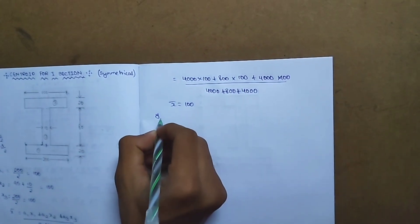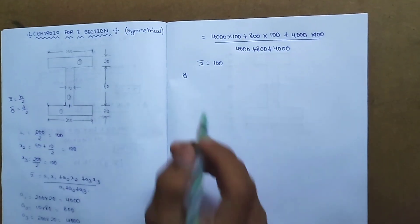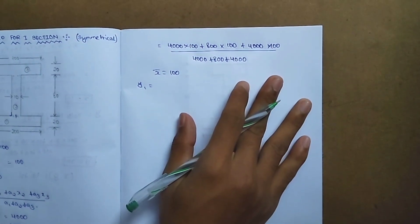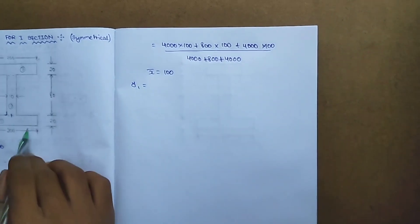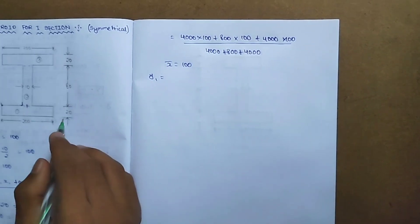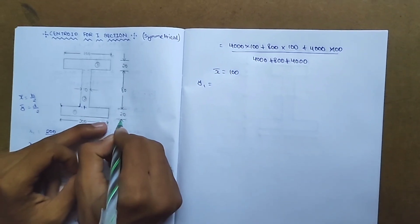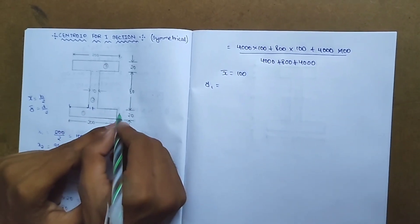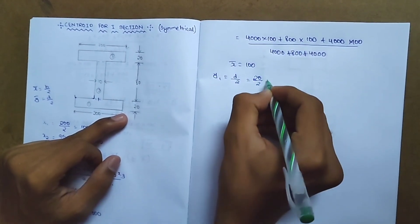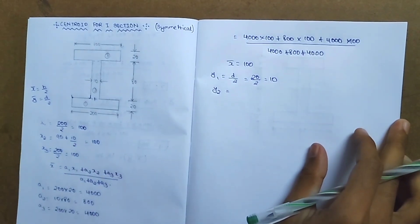Now calculate y-bar. We need y1, y2, y3. y1 is measured from the x-axis upward to the first rectangle's center. y1 equals d by 2, which is 20 by 2, equals 10.